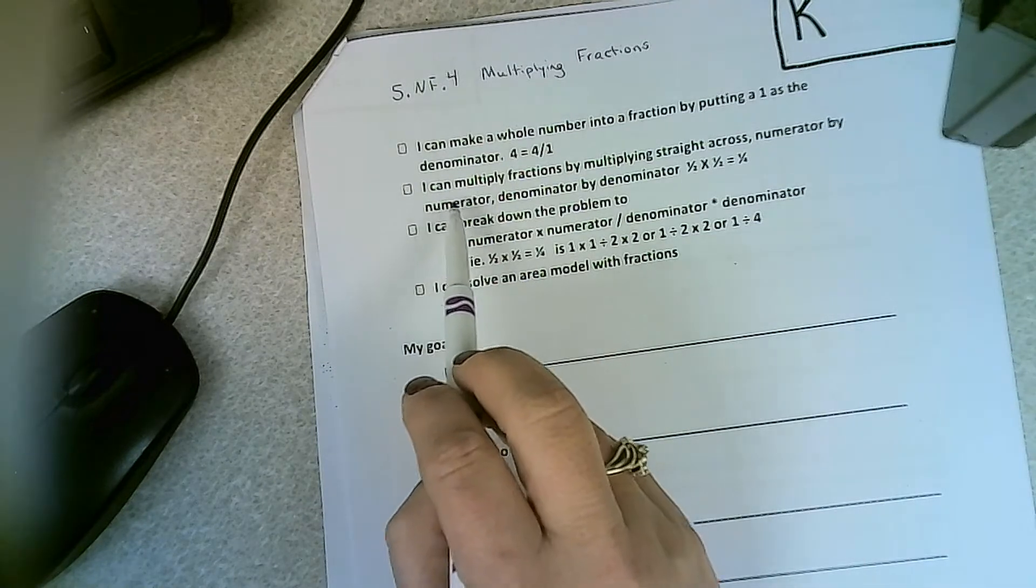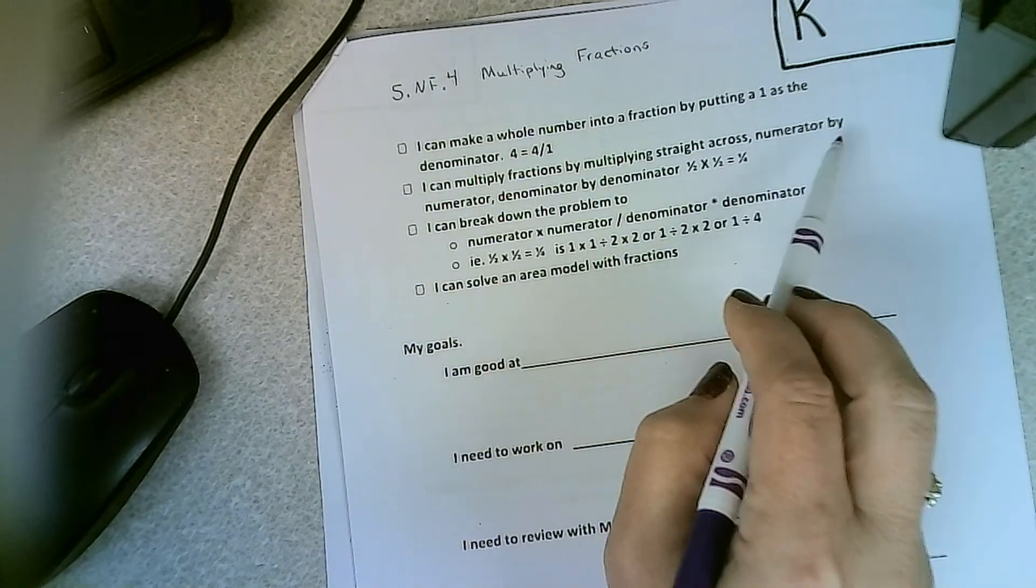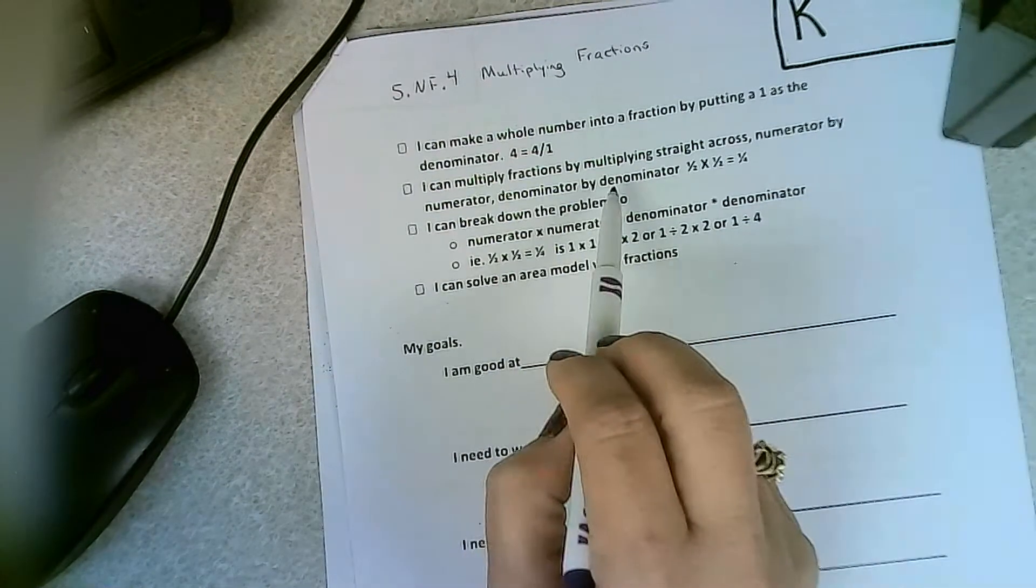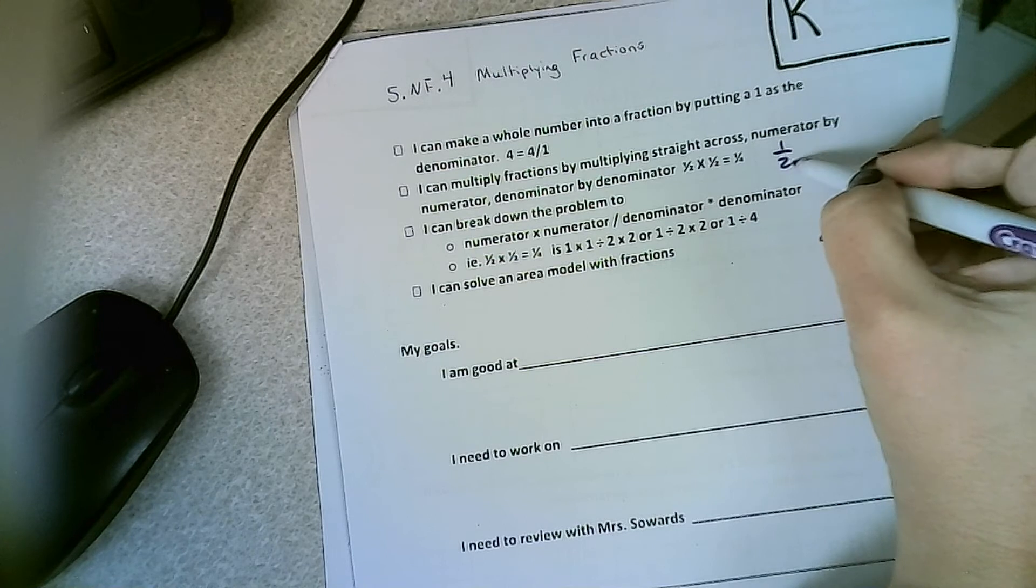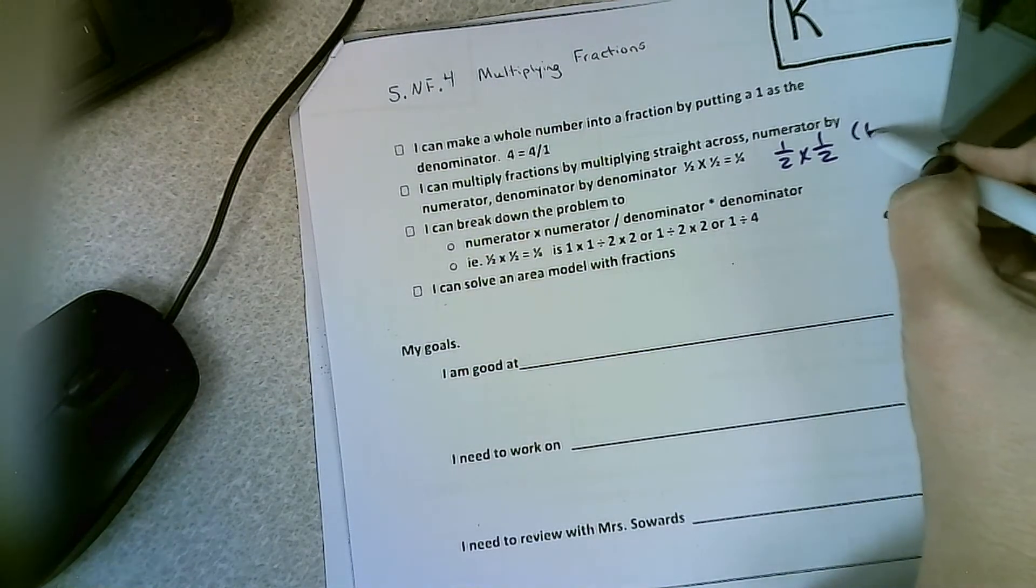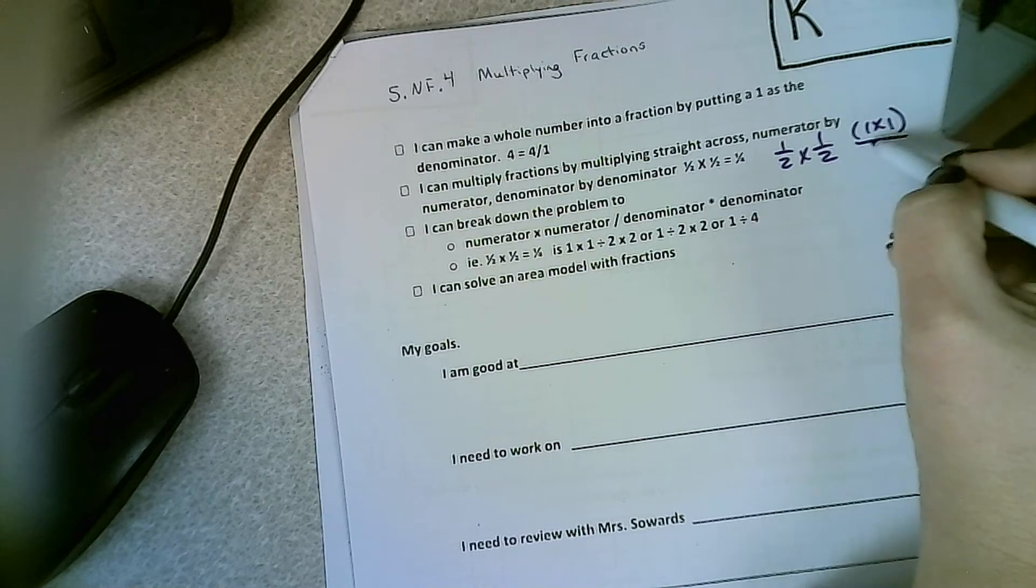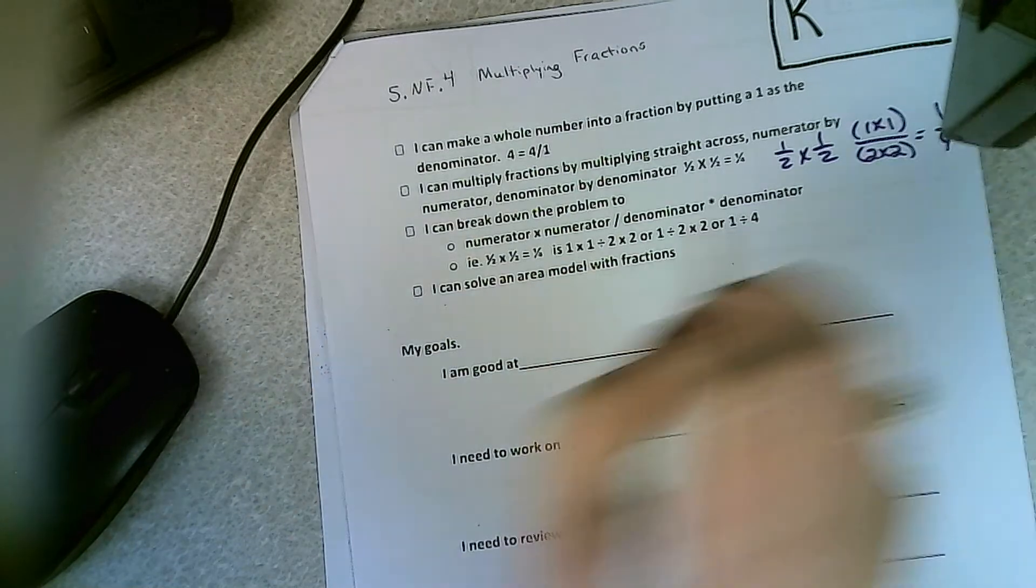I can multiply fractions by multiplying straight across, numerator by numerator, denominator by denominator. One-half times one-half. It's 1 times 1 and 2 times 2 to get 1 over 4.